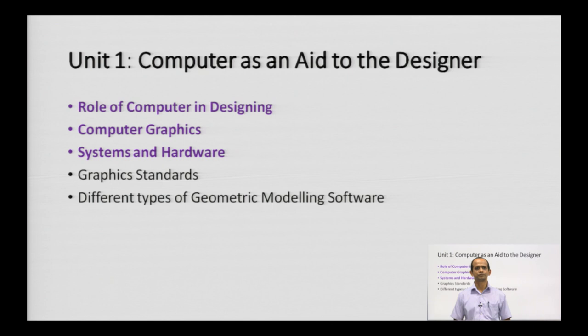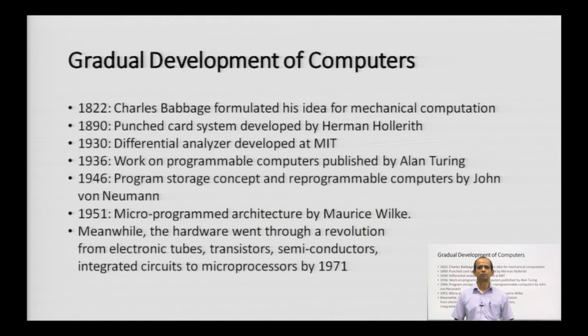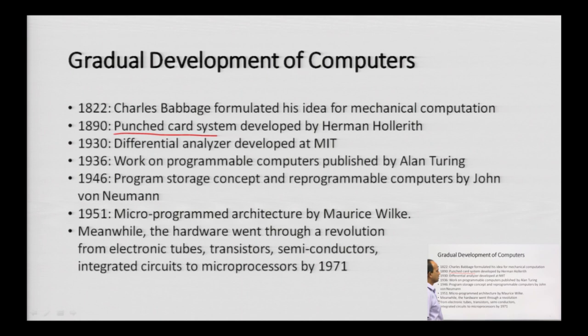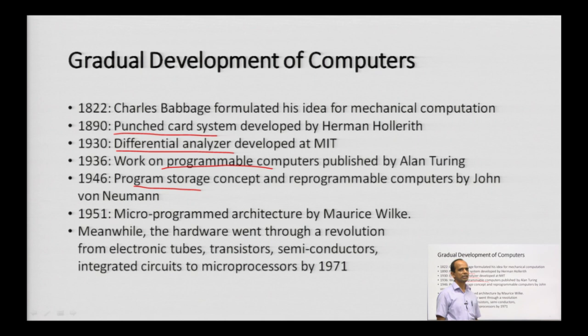Looking at the gradual development of computers, the initiation of computation took place in 1822 when Charles Babbage formulated his idea of mechanical computation. In 1890, punched card systems were developed by Herman Hollerith. In 1930, differential analyzers were developed at MIT. Alan Turing then published a paper on programmable computers, and in 1946 the program-storage concept and reprogrammable computers were introduced by John von Neumann.